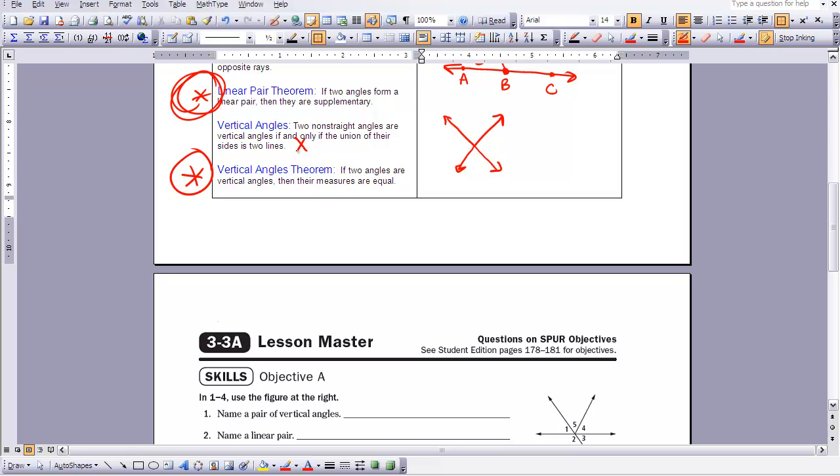So if two angles are vertical angles, then their measures are equal. So if you look at this situation, this non-straight angle and this non-straight angle are vertical angles. And so we know that those have the same measures. So the measure of angle one is going to equal the measure of angle two.